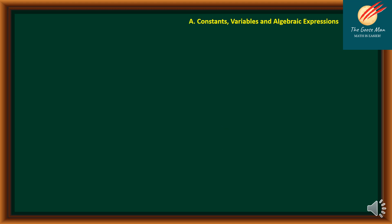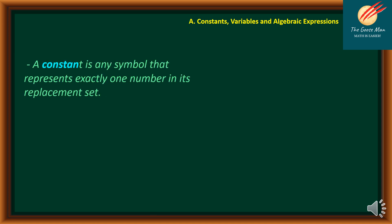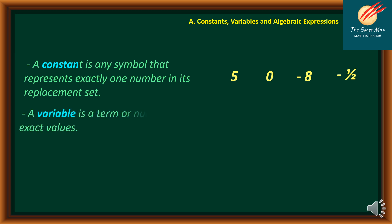To study more about algebra, let's talk about some definitions of terms. A constant is any symbol that represents exactly one number in its replacement set. For instance: 5, 0, negative 8, or negative one-half. A variable is a term or number with exact values, such as A, X, Y, or capital D.